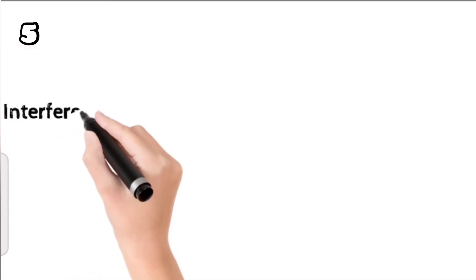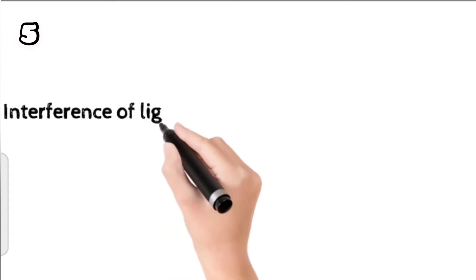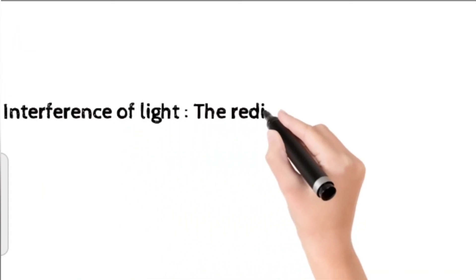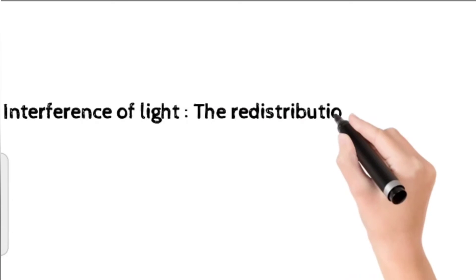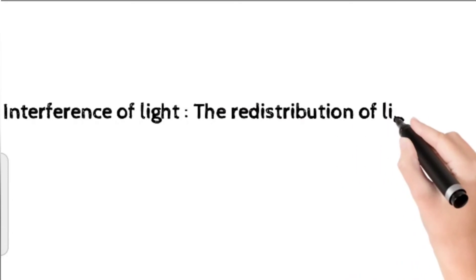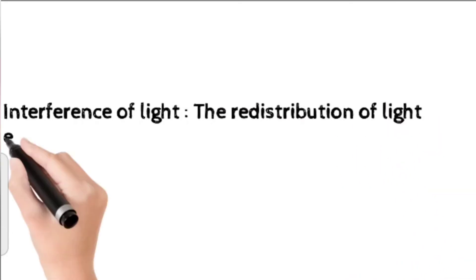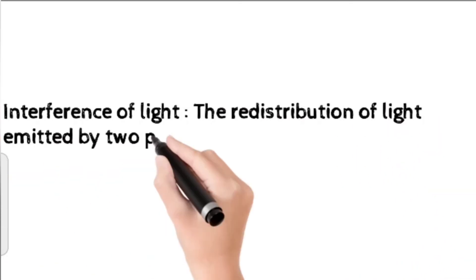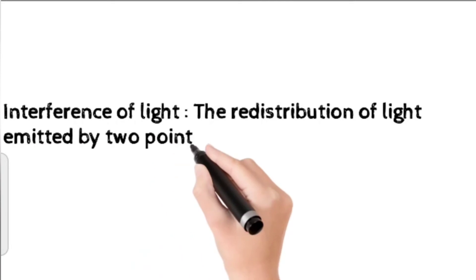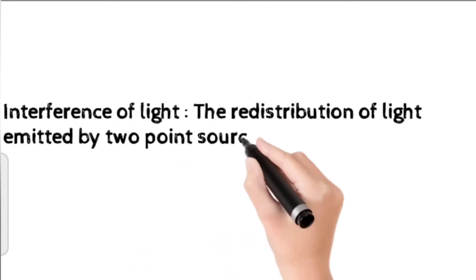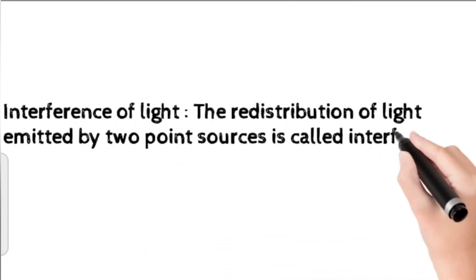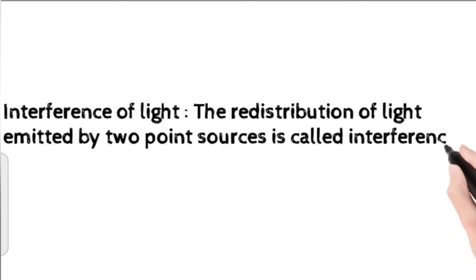5. Interference of light. The redistribution of light emitted by two point sources is called interference of light.